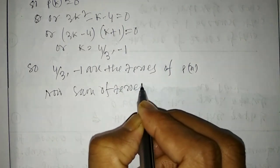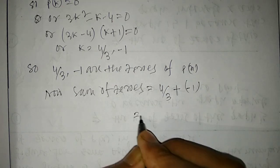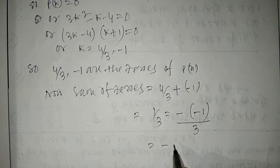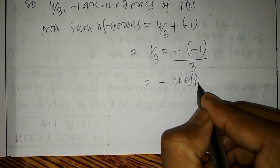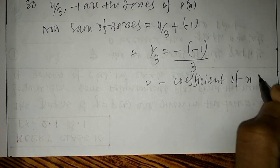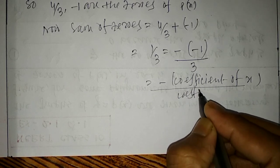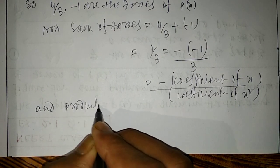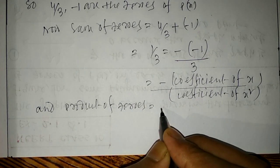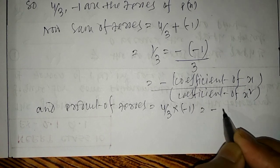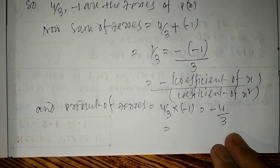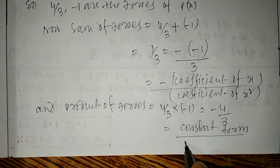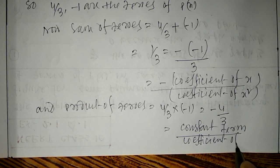Now, sum of zeros = 4/3 + (-1) = 1/3, which equals minus (coefficient of x) divided by coefficient of x², that is -(-1)/3 = 1/3. And product of zeros = (4/3) × (-1) = -4/3, which equals constant term divided by coefficient of x², that is -4/3.